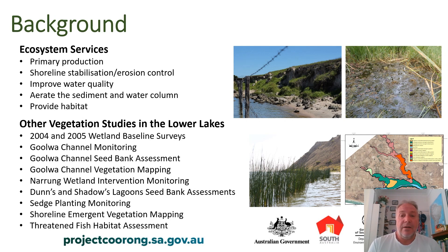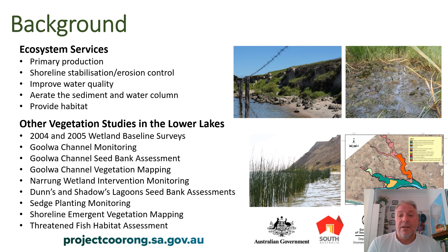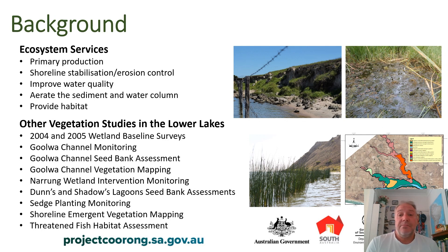The last piece of complementary work was undertaken after water levels were reinstated, assessing the success of planting river club rush around the shorelines of Lake Alexandrina and Lake Albert. It was planted in typically about 50 centimetres of water along the shorelines, and its primary aim was to stop erosion — which it did very well. It also meant that the area between the shoreline and the river club rush became a zone where diverse plant communities were able to recruit, providing an unexpected bonus of improving biodiversity just by planting one species.